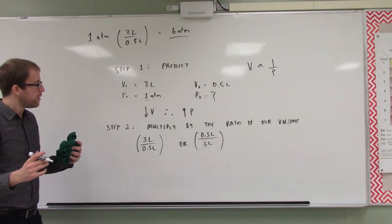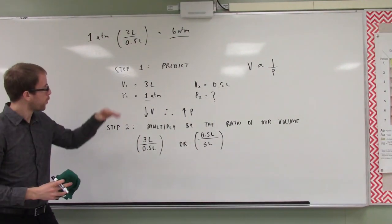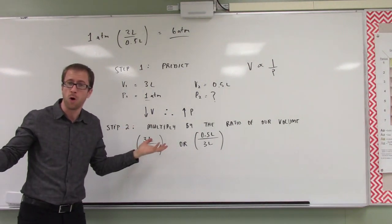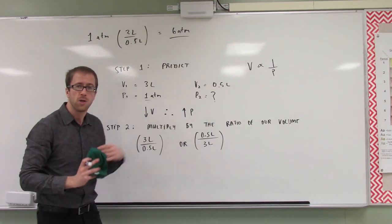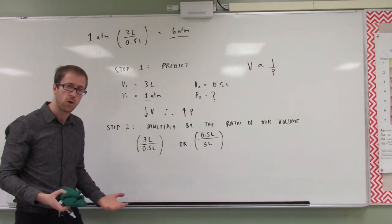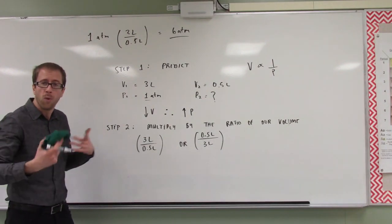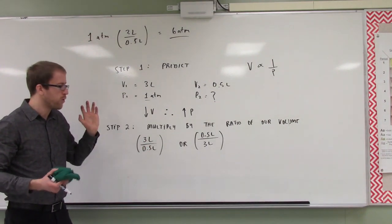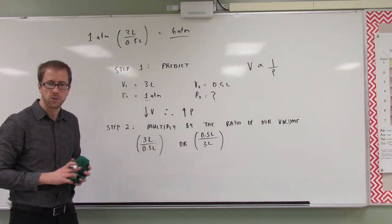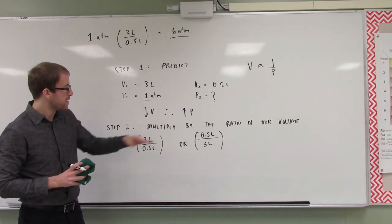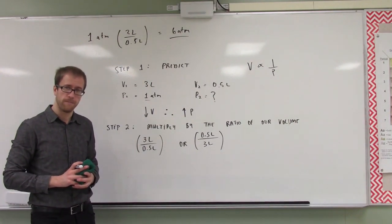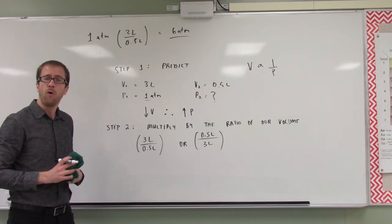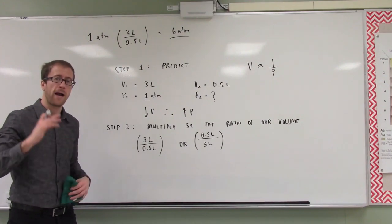So make sure that when you are doing these problems, you predict: did my volume go down or up, and what happened to my pressure as a result? Did my pressure go up or down, and what happens to my volume? Then lastly, multiply by the ratio of your volumes or the ratio of your pressures in a way that fits your prediction. I really recommend you get used to solving by this method — it's going to help you a ton with number sense and thinking fractionally.